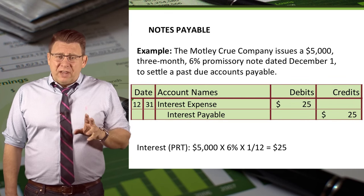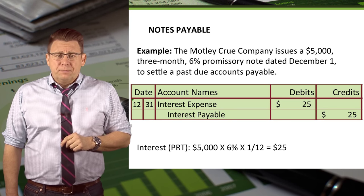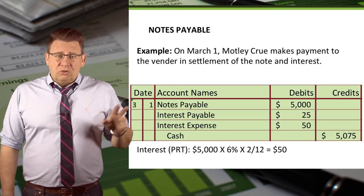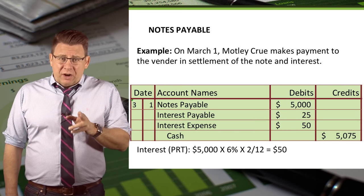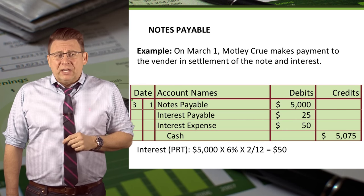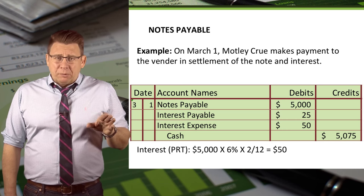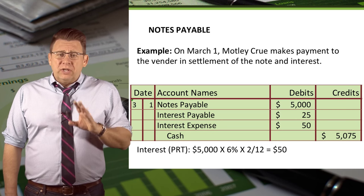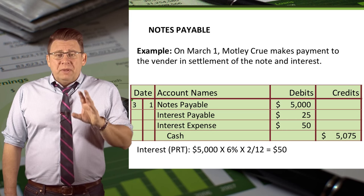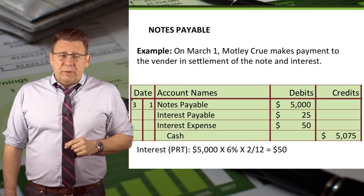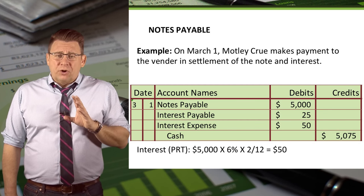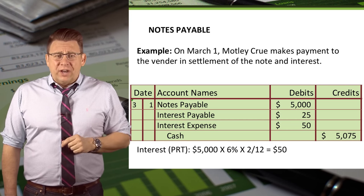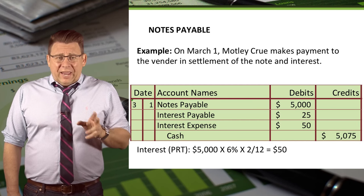The adjusting entry would be $25 because that's for one month of interest. Paying off the note on March 1st is a more complex journal entry. Notes payable is debited for $5,000. Interest payable, which has a credit balance of $25 from the December 31st adjusting entry, is debited for $25 to zero it out. Interest expense is debited for $50, which is the amount of interest incurred in the new year. Finally, cash is credited for $5,075, which is the principal and interest paid.